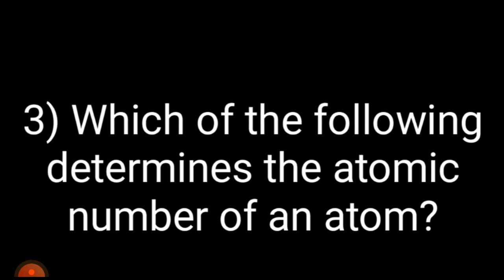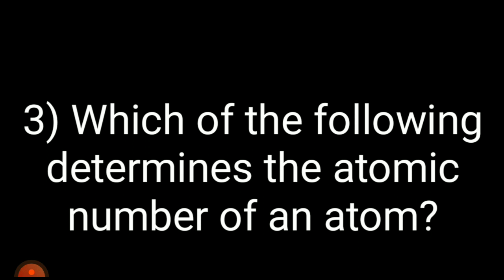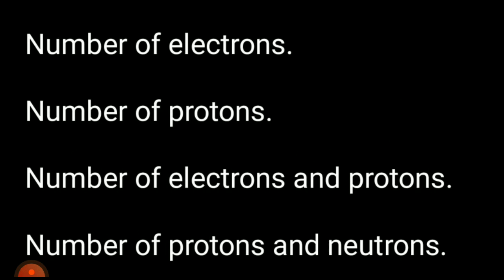Third question: which of the following determines the atomic number of an atom? The options are: A) number of electrons; B) number of protons; C) number of electrons and protons; D) number of protons and neutrons. Your time starts now.